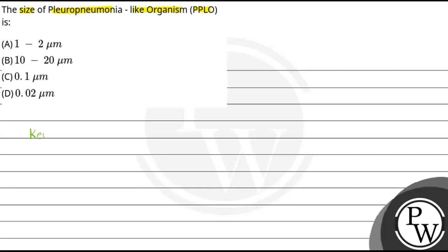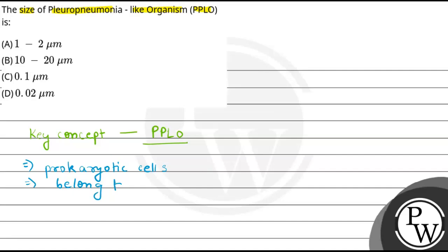If we talk about the key concepts, that will be PPLO — pleuropneumonia-like organisms. Basically, they are the prokaryotic cells. We can say they belong to the mycoplasma group. We know that they are the smallest cells, and that is the reason, if we get PPLO, they will be very small. They are so small that they multiply very quickly as compared to eukaryotic cells.